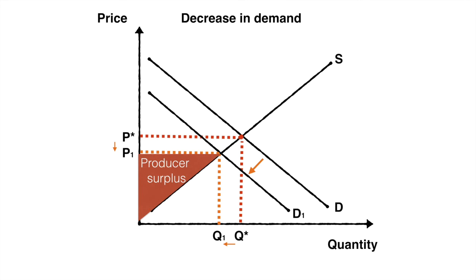Although it has not been graphed here, you should be able to determine the change in consumer surplus as well. While the original consumer surplus was the area above P star and below D, it is now the area above P1 and below D1.